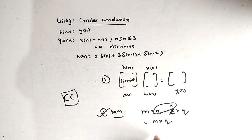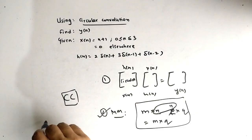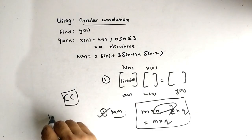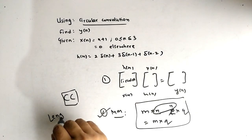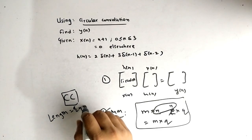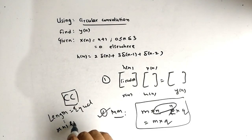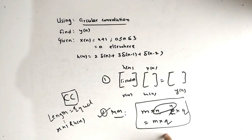The next point is: to make this matrix multiplication possible, the lengths should be equal. The length of x(n) and h(n) should be equal to make the matrix multiplication possible.